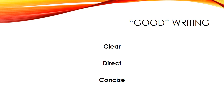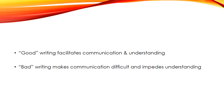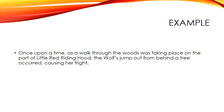First, let's talk about what we mean by good writing. Some simple adjectives we might use to describe good writing are that it is clear, direct, and concise. In contrast, bad writing is unclear, indirect, and rather than being concise and easy to understand, it is dense and abstract. To sum up: good writing facilitates communication and understanding, while bad writing makes communication difficult and impedes understanding.